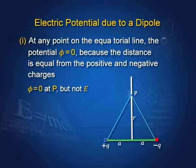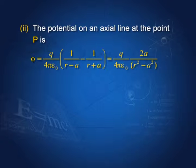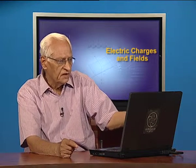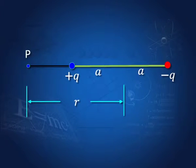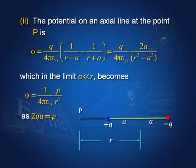We take a point along the axis of the dipole, say p. The distance r equals r plus a from one charge, and r minus a from the other. The potential due to +q is q/(4πε₀) times 1/(r-a), and due to -q it is -q/(4πε₀) times 1/(r+a). Adding them, in the limit where a is much less than r, the potential is (1/4πε₀) × p/r², where 2aq = p is the dipole moment.